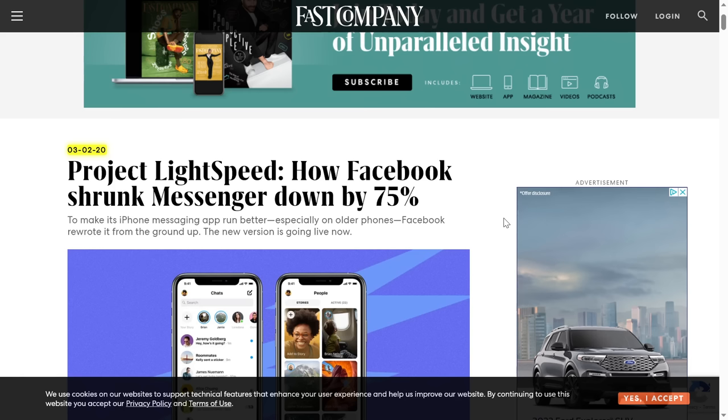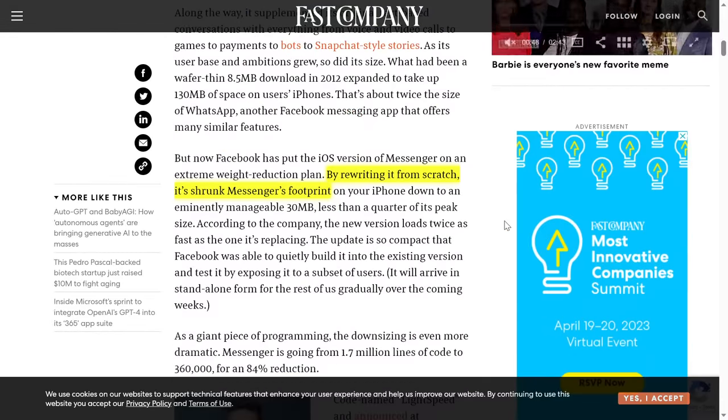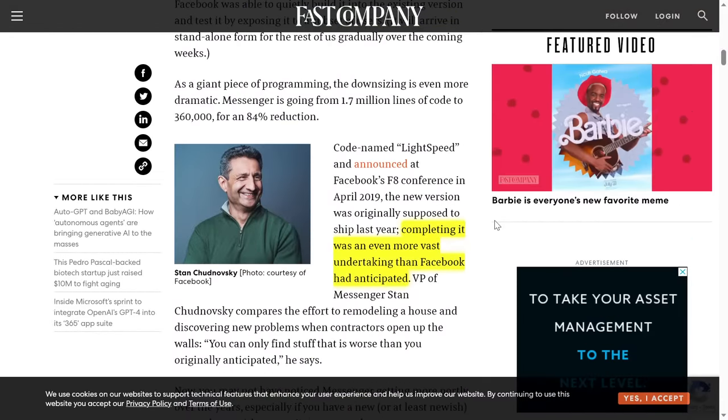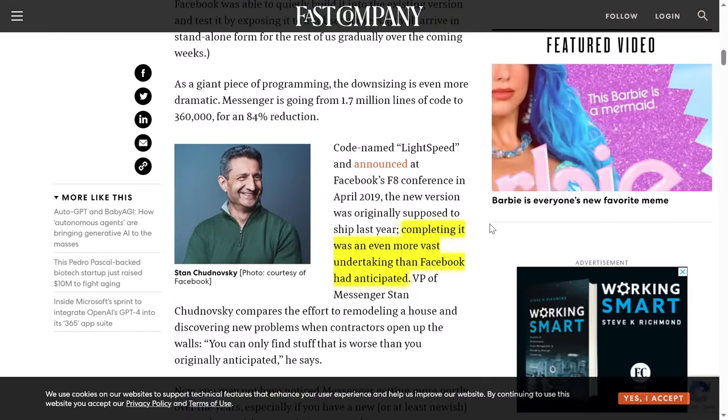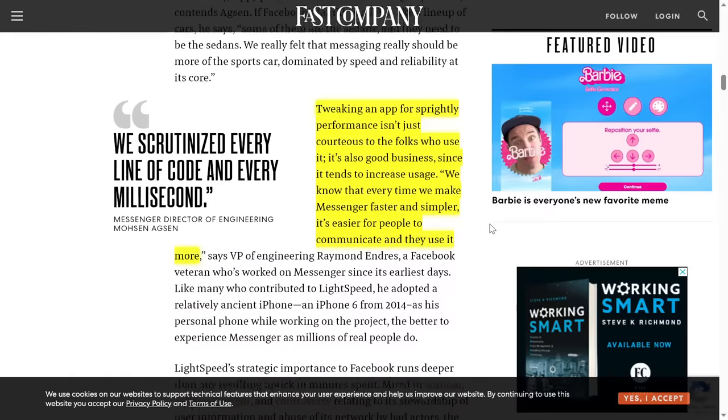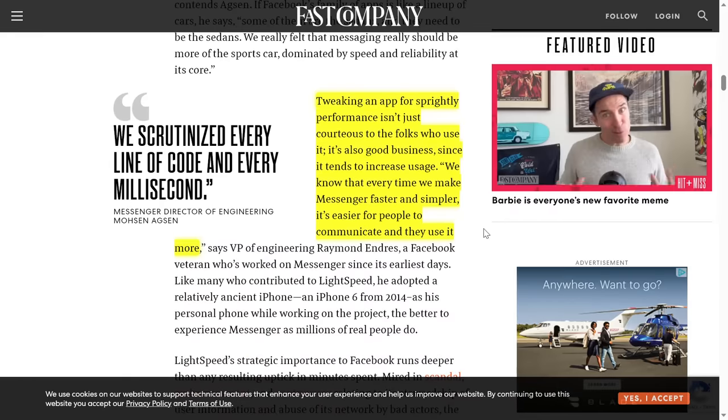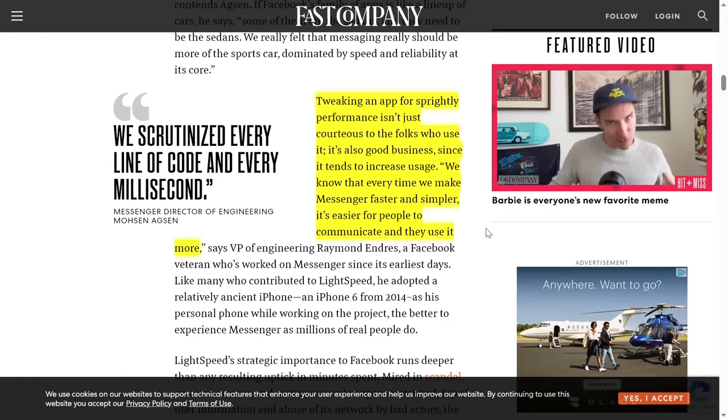In 2020, Facebook announced that it had done another major engineering effort to reduce the footprint of Messenger by 75%. How did they do this? By rewriting the entire application from scratch. How much work did this take? It was apparently a multi-year effort and was, quote, an even more vast undertaking than Facebook had anticipated. Why undergo this massive engineering effort to reproduce the same application in a smaller footprint? Because it was, quote, good business to do so.